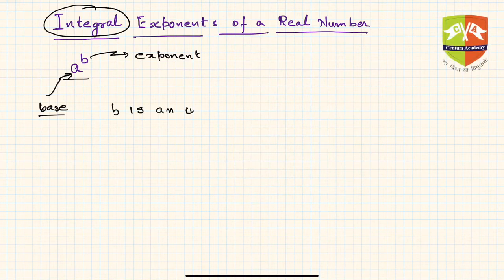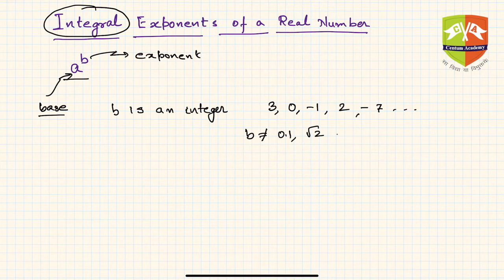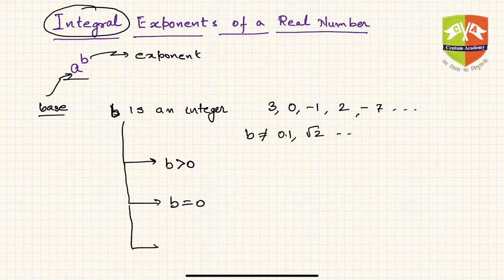b is an integer — like 3, 0, -1, -2, -7, and so on — and b is not equal to numbers like 0.1 or √2. When b is an integer, there are three possibilities: b is greater than 0, b is equal to 0, and b is less than 0.